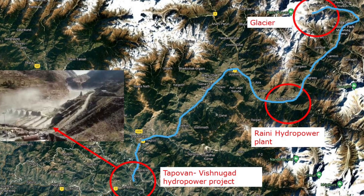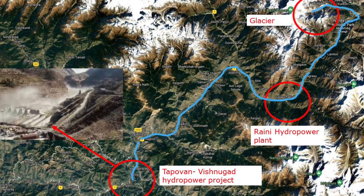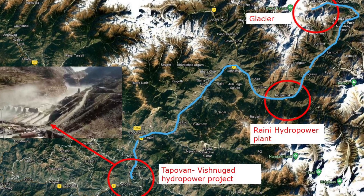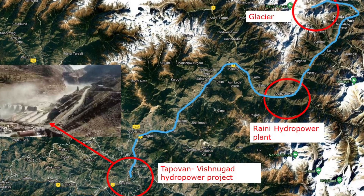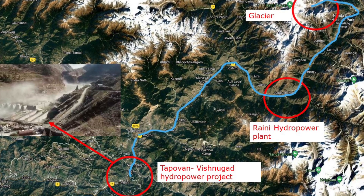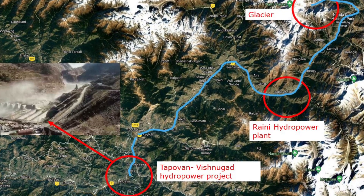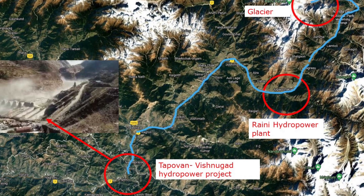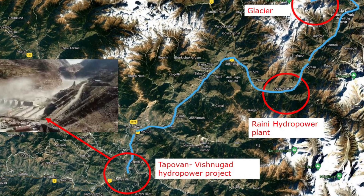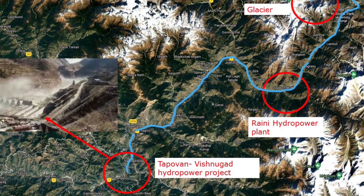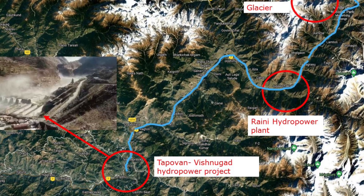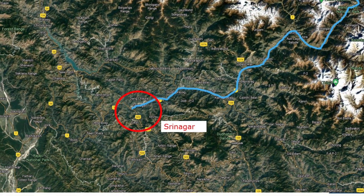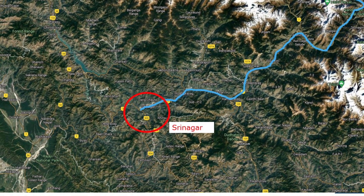The next power plant hit was the Tapu Khan hydro power plant, which was under development. The picture here shows the plant after the flooding has left. It is my understanding that workers were working in tunnels when the wave hit. The wave and flooding continued further down past the city of Srinagar.